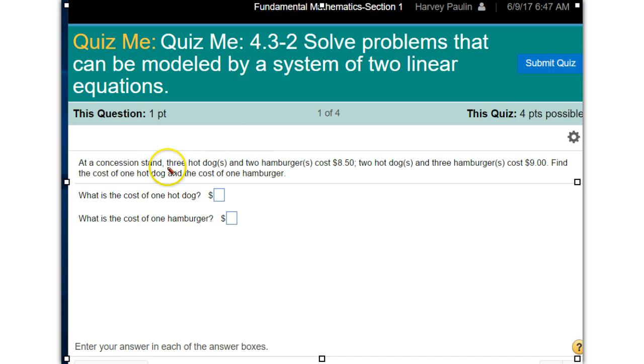Here we have three hot dogs and two hamburgers cost $8.50. So our first equation would be three hot dogs plus two hamburgers equals 8.5. You don't need to put the other zero there.